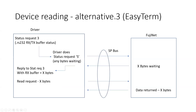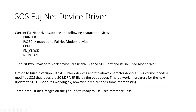Another alternative Easy Term was doing: the original RS-232 driver for SOS would have had interrupt-driven receive buffers, so it would do a status request 3 giving back the RX/TX buffer status. We don't have that, so inside the driver it just translates it to do a status request to FujiNet, gets back bytes waiting, and simulates the response to say the RX buffer has X bytes — zero or some amount — and then the program reads. A couple of little cases to handle, but nothing too major.